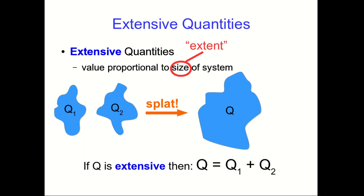Again, the value of Q for the total is the sum of Q1 and Q2, if Q is an extensive quantity.